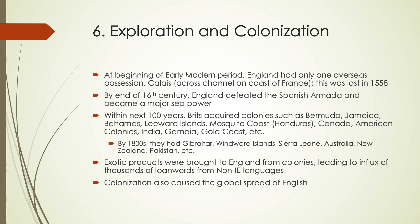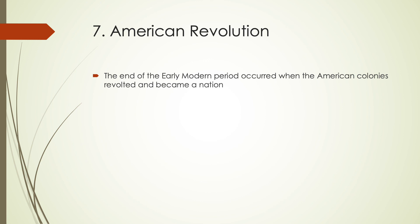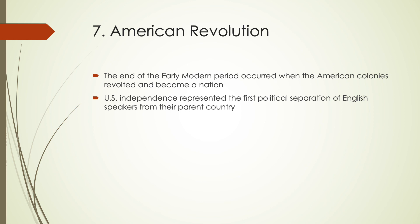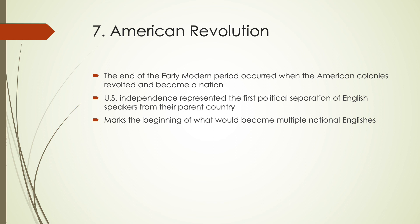The end of the early modern time period is usually marked by the American Revolution. The American colonies revolted and became a nation. This independence of the United States represented the first major political separation of English speakers from their parent country, England. There were English speakers that were no longer just in England, that had their own independence. This marks the beginning of what would become multiple different national Englishes — American English, Australian English, New Zealand English, Indian English, South African English — as these colonies took off and started gaining their independence.